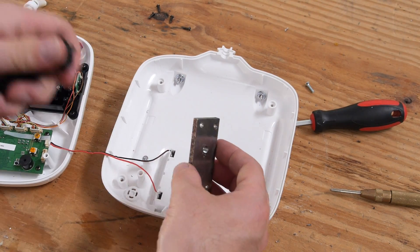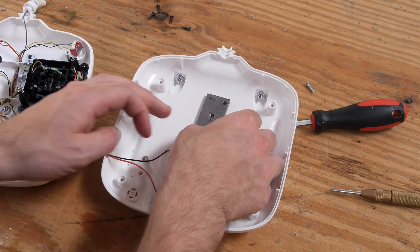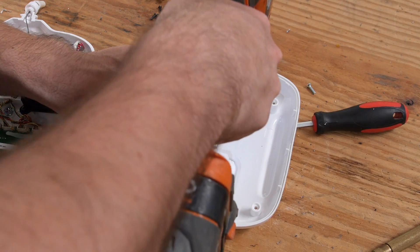Then position the mount in the center of the back of the controller, and using the holes in the metal as a guide, drill pilot holes through the plastic cover.